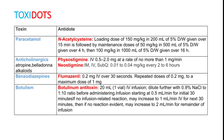Next is anticholinergics, like atropine and belladonna. You can give neostigmine IM, IV, or subcutaneous — 0.01 to 0.04 mg per kg every 2 to 6 hours.